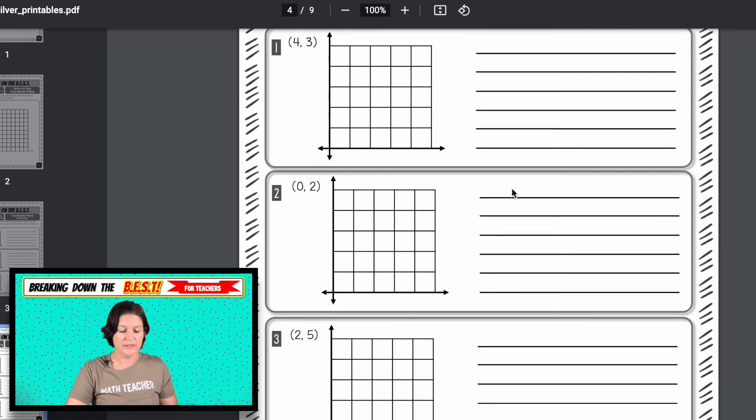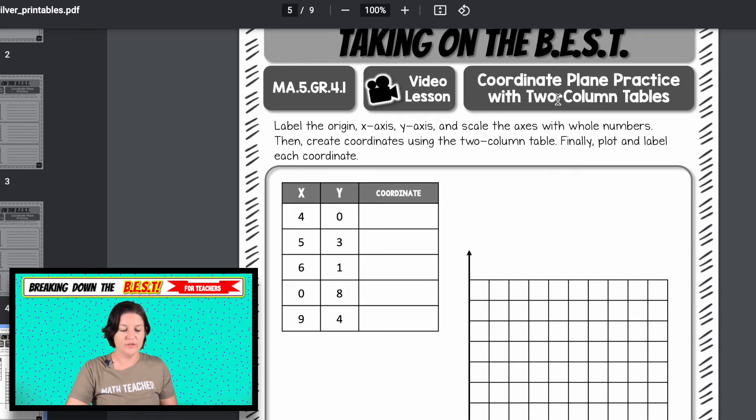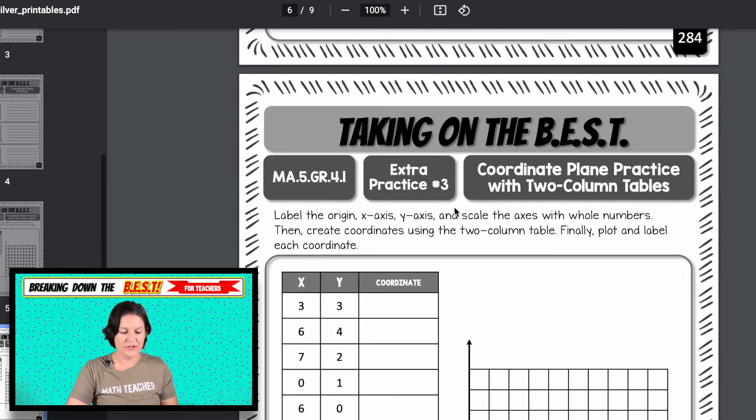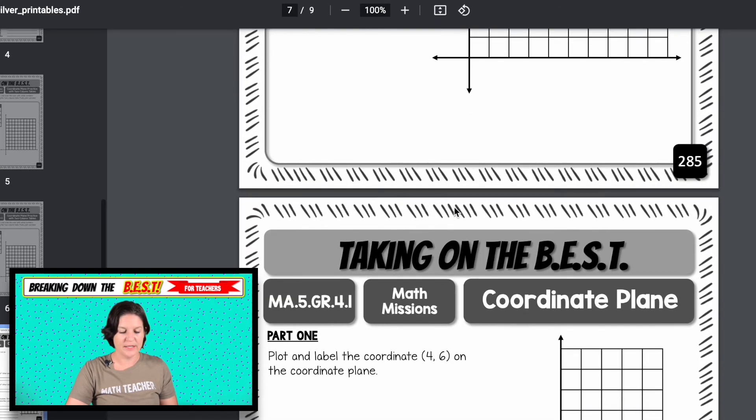And here is some extra practice for you. Then we've got the other video lesson coordinate plane practice with two column tables, even though there's three columns. You saw that just a second ago and here is the extra practice for that. So it's the same kind of thing.